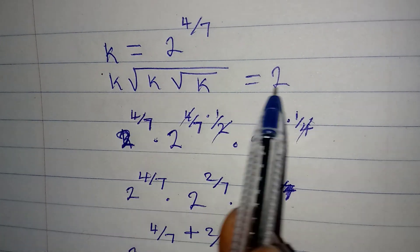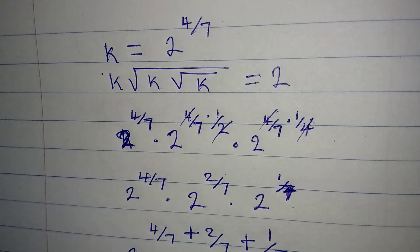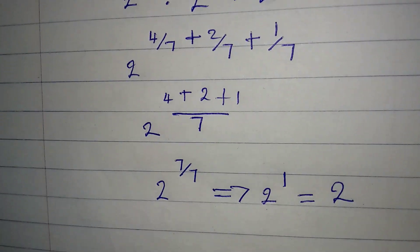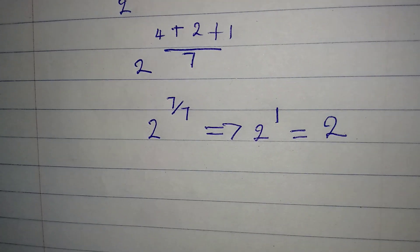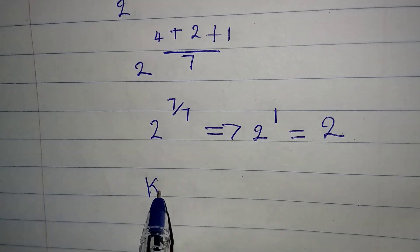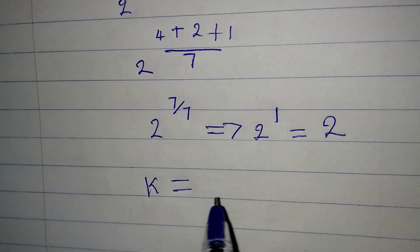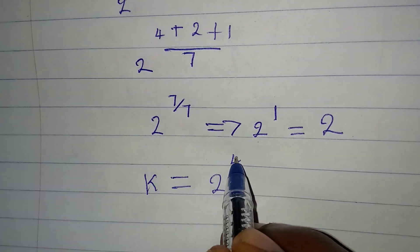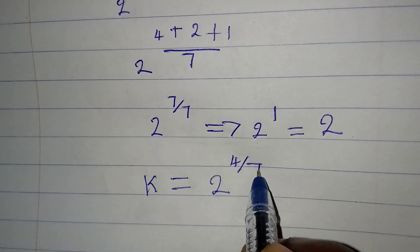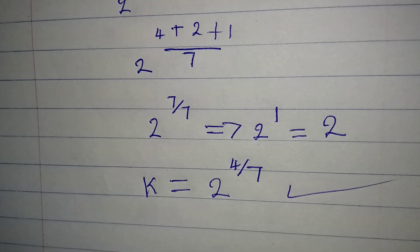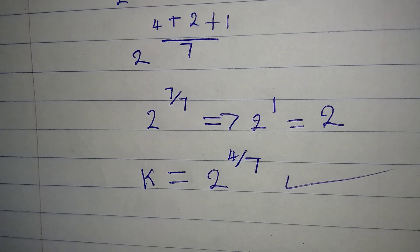This confirms that k is indeed equal to 2 to the power of 4/7. Thank you guys for watching.